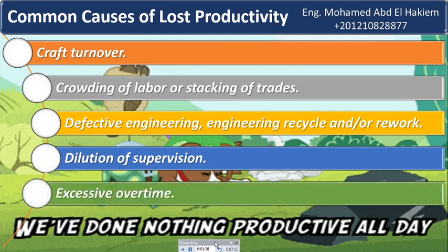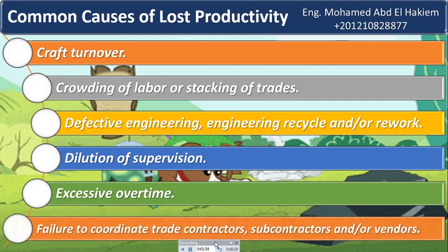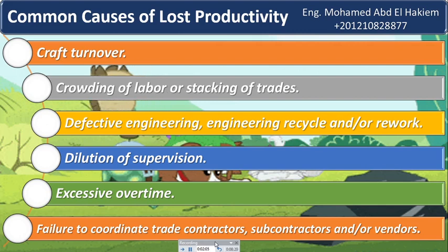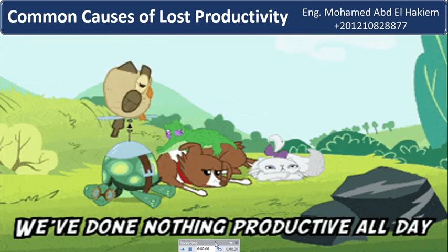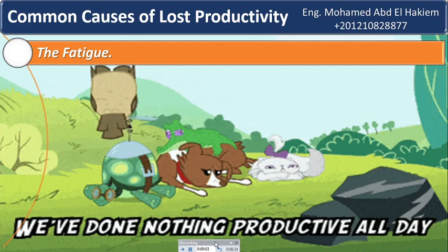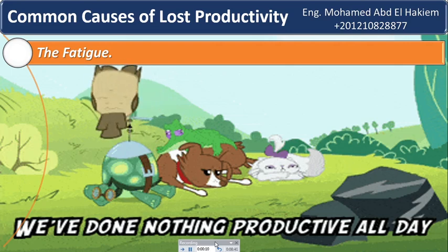Eleven: excessive overtime. Productivity typically declines as overtime work continues. The most commonly stated reasons include fatigue, decreased morale, poor workmanship resulting in higher than normal rework, and increased accidents. Twelve: failure to coordinate trade contractors, subcontractors, and/or vendors. If the project management team fails to get subcontractors, material, or equipment to the right place at the right time, productivity may decline as crews will not have the necessary resources to accomplish their work. Thirteen: fatigue. Craftsmen who are tired tend to slow down, make more mistakes than normal, and suffer more accidents and injuries, decreasing productivity for the entire crew.